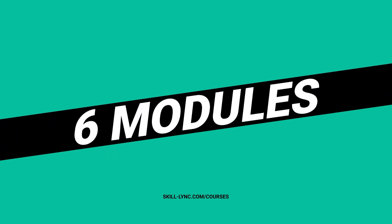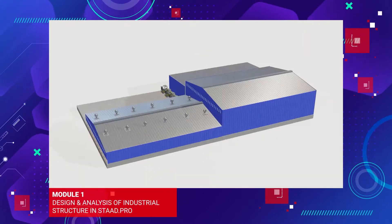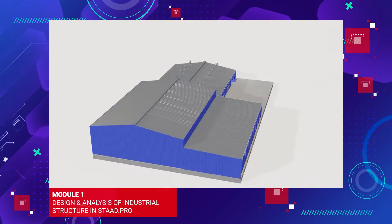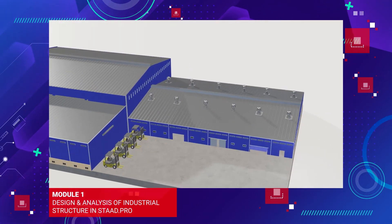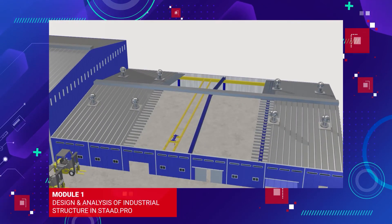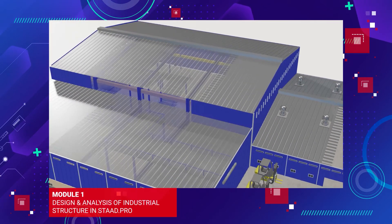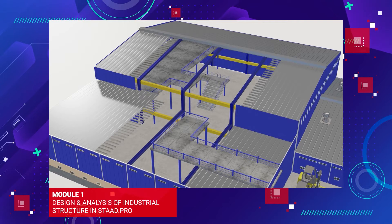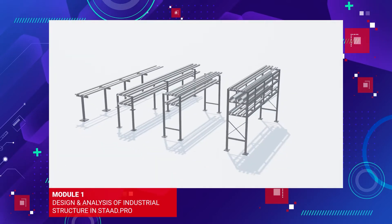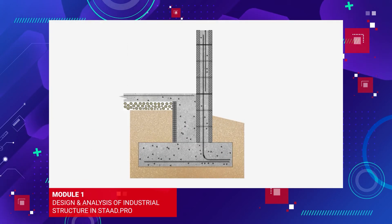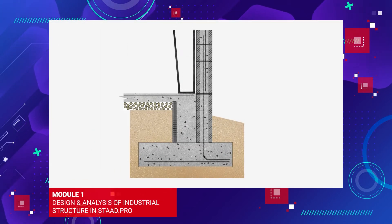The course has six modules. Module 1 covers the design and analysis of industrial buildings using STAT Pro. Learn the fundamentals of industrial buildings, pre-engineered buildings and pipe rack structures, and the basics of foundations and how to design them in STAT Pro.